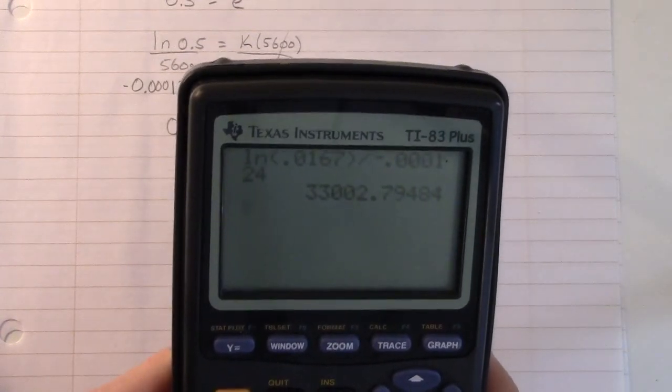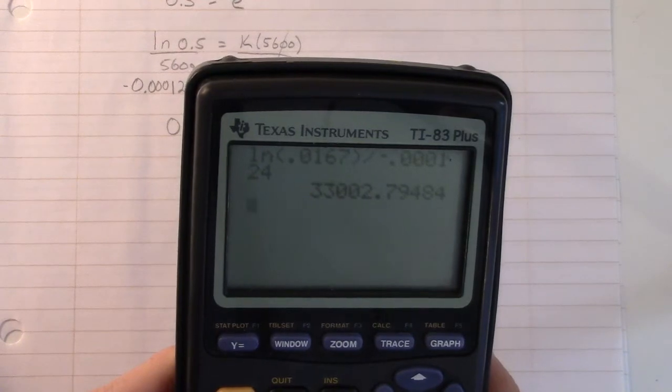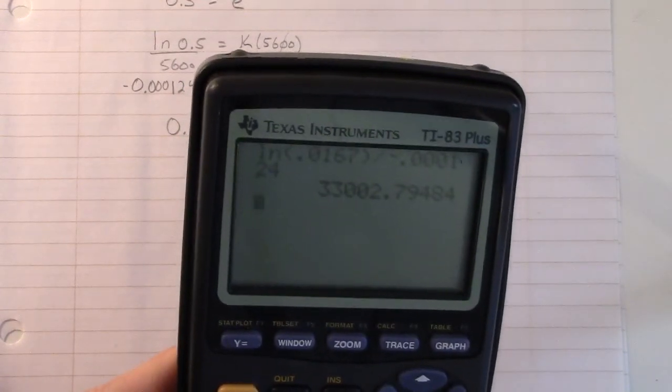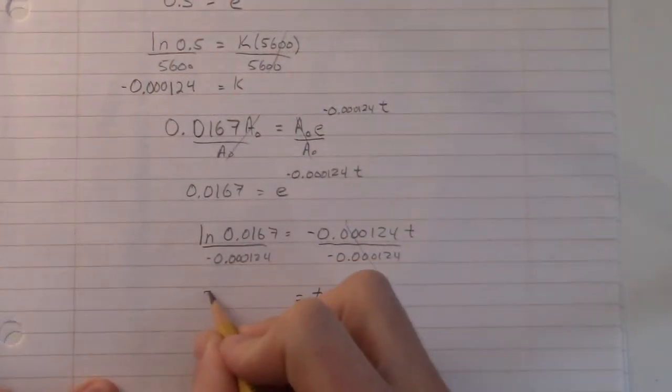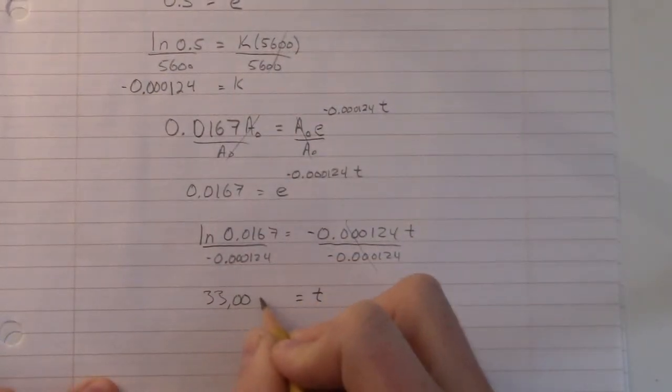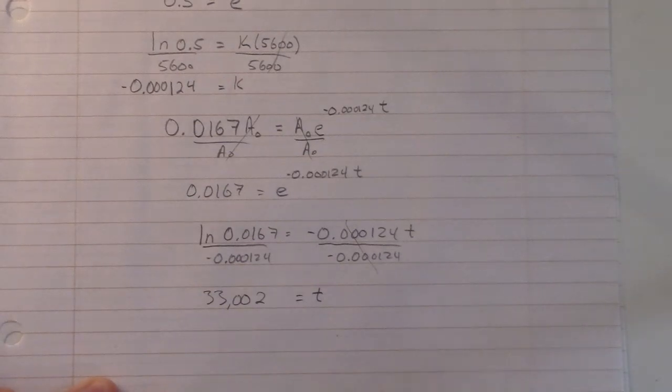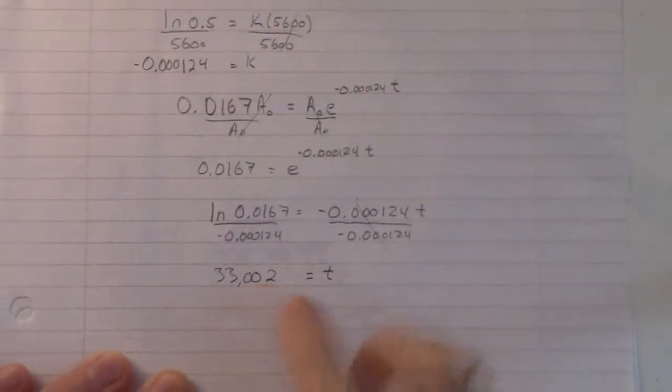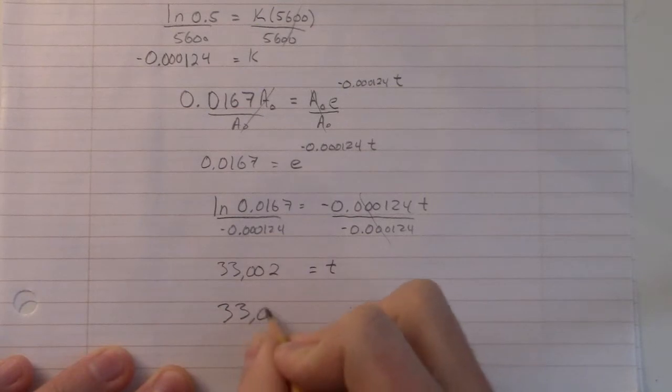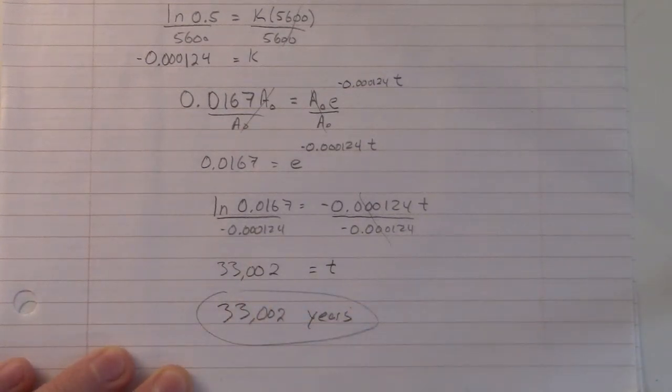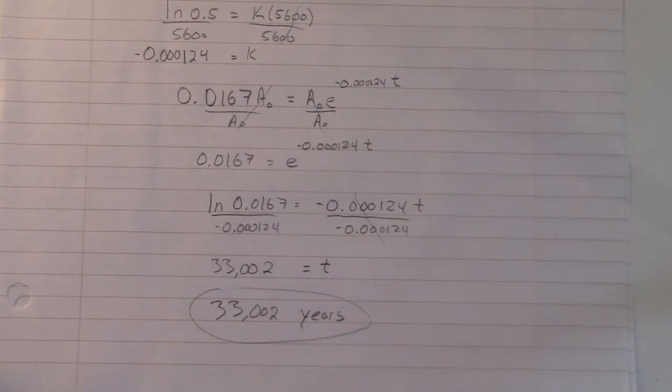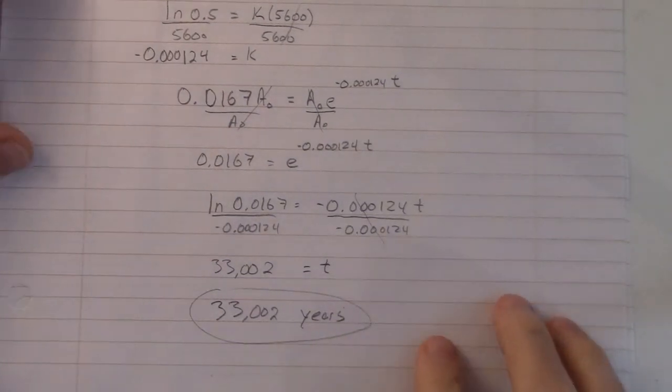And you get 33,002.794. So, let's approximate that to 33,002 years. Alright. So, we got 33,002 years. I mean, it's an approximation anyway. It's kind of goofy to write that at all, but kind of fun. 33,002 years is our answer. That's how long it took, or that's how long ago, I should say, that tree was cut and burned, approximately, of course.